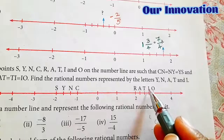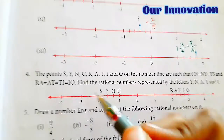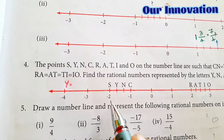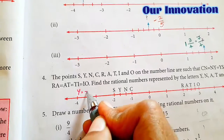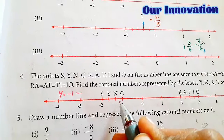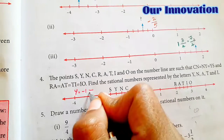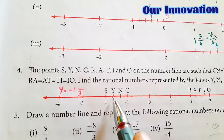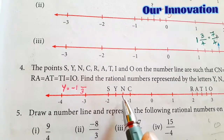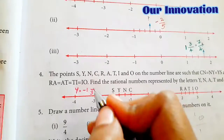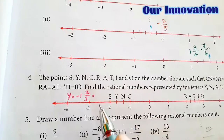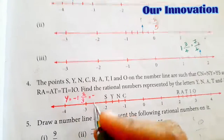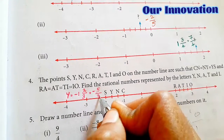So first, let us find Y. Y is located between minus 1 and minus 2. So the whole number part is minus 1. The denominator: it is divided into 3 parts — 1, 2, 3 — so denominator is 3. Y is at the 2nd position, so numerator is 2. So Y is minus 1 and 2 by 3. Converting to improper fraction: 1 into 3 is 3, plus 2 is 5, so Y equals minus 5 by 3.